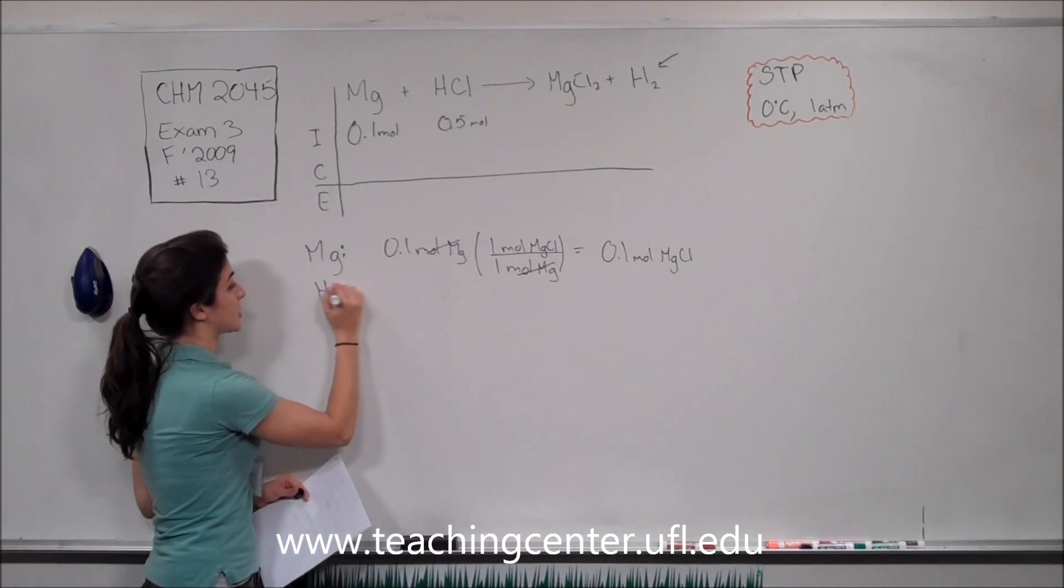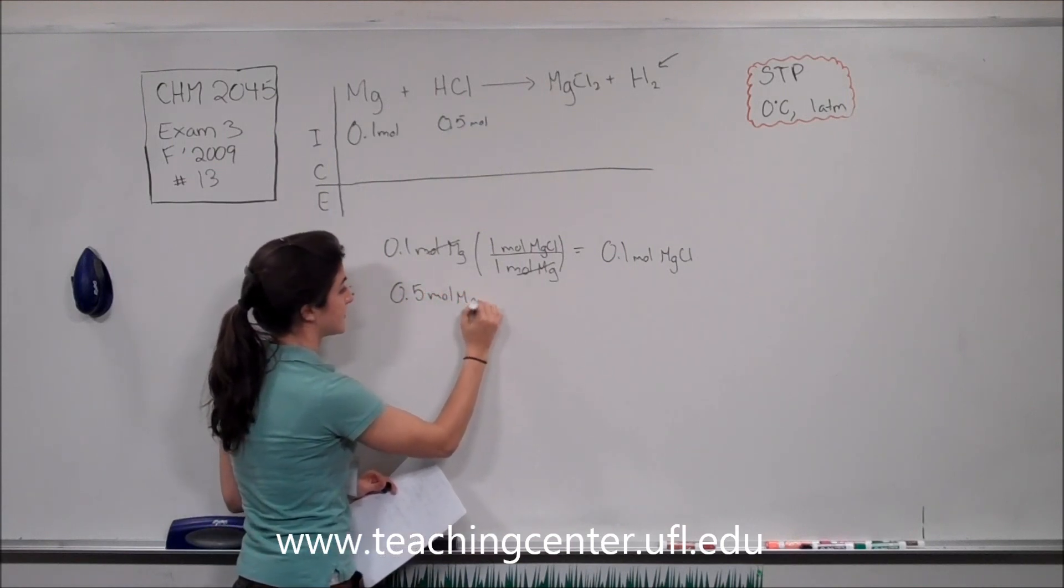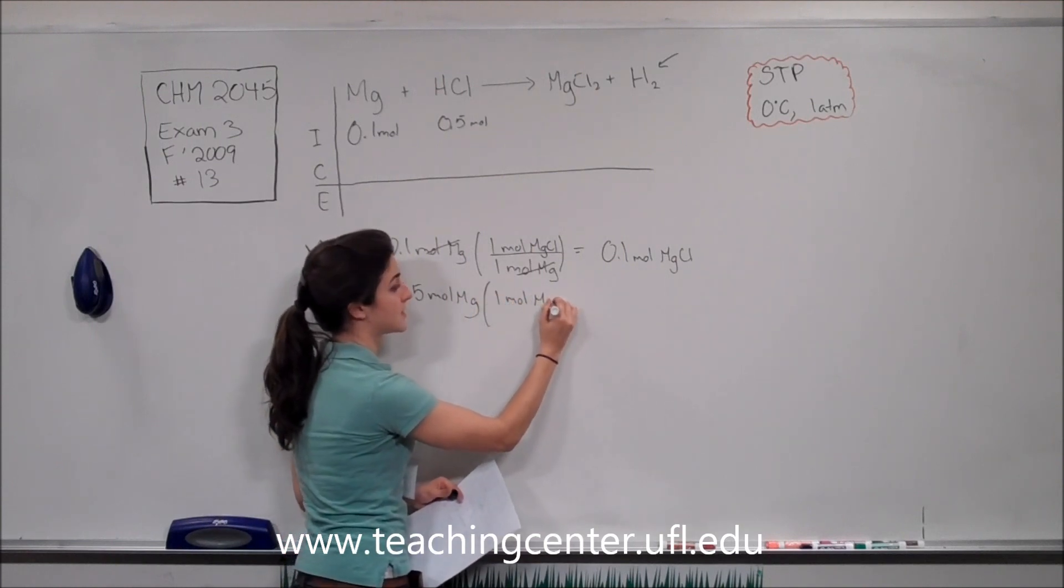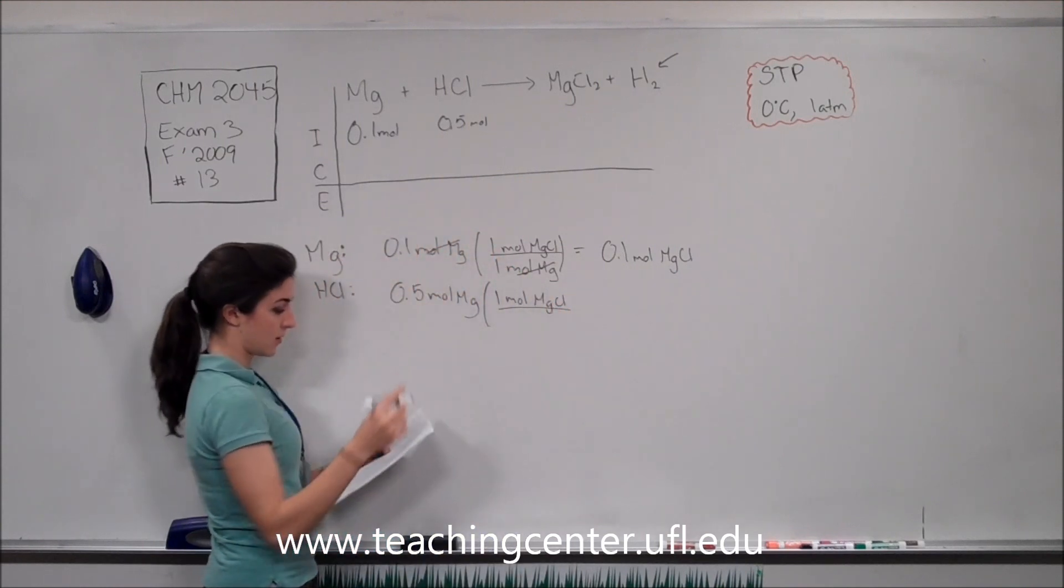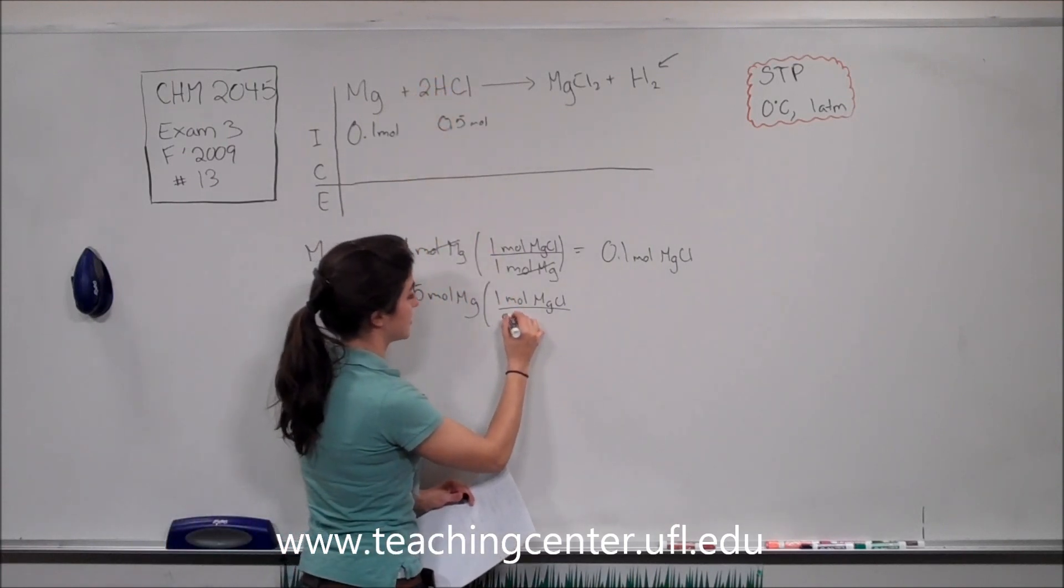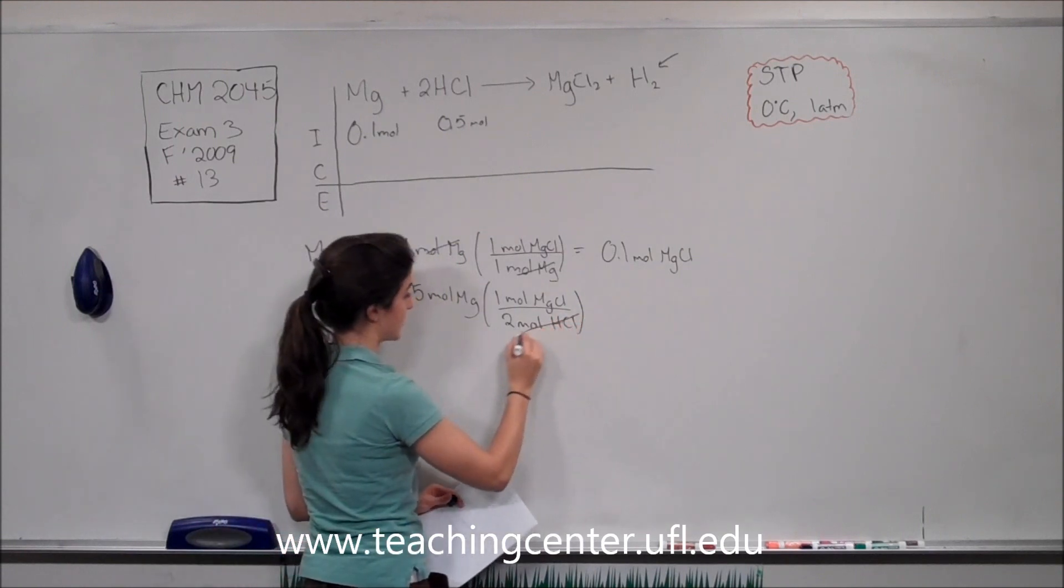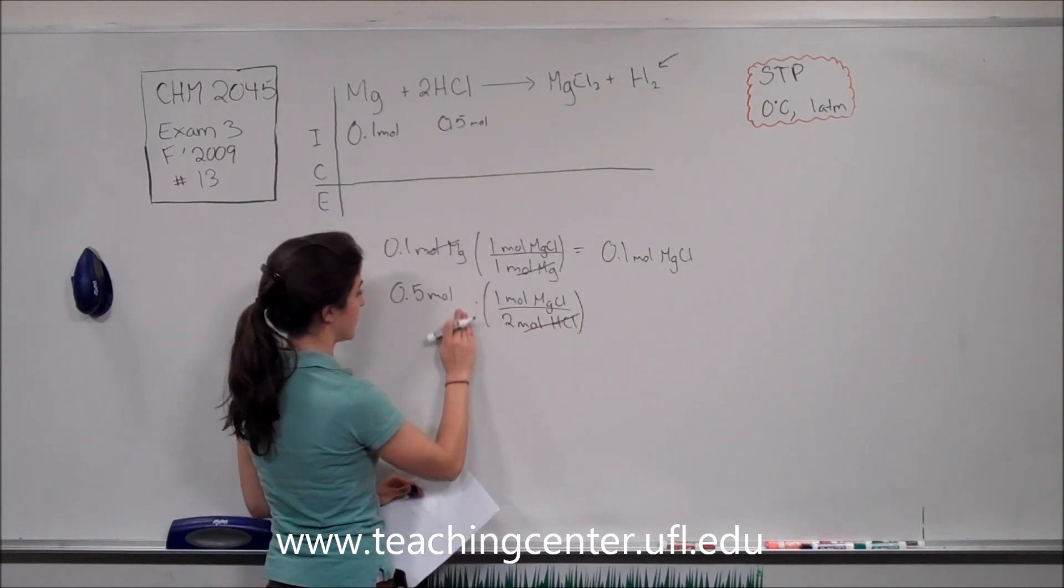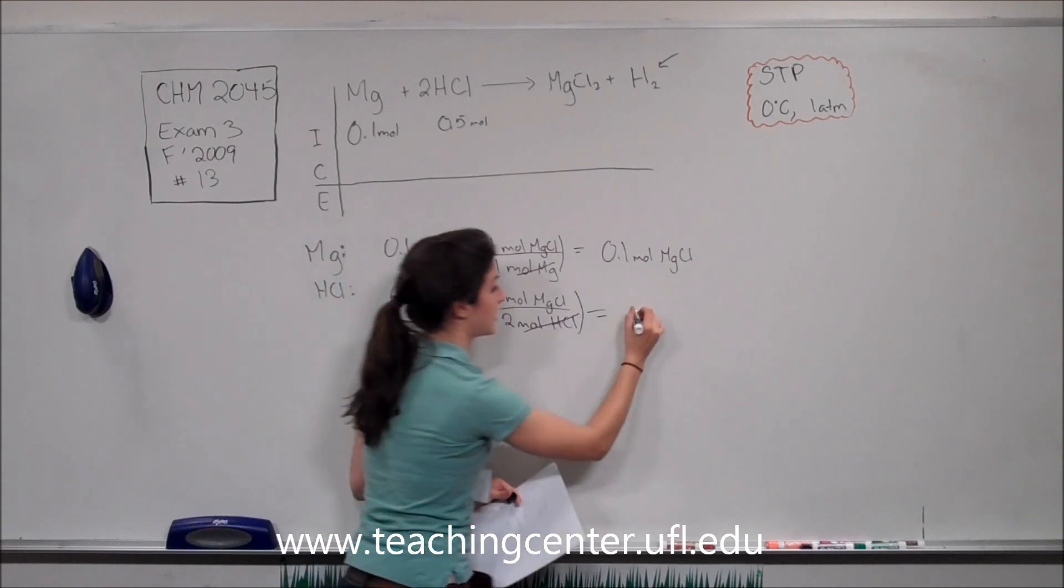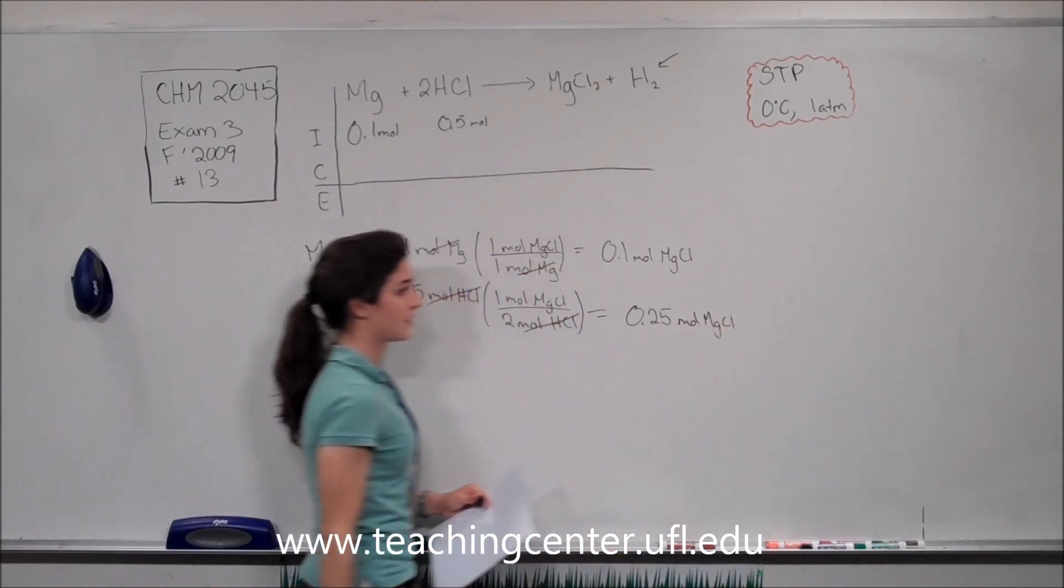Now looking at the hydrogen chloride, we use 0.5 moles. If we use all of that, we get 1 mole of magnesium chloride for every mole. Oh, there's a 2 missing. I'm sorry, that's supposed to be 2 HCl. So 2 moles of HCl used. So cancelling like terms, we have 0.25 moles of magnesium chloride produced.